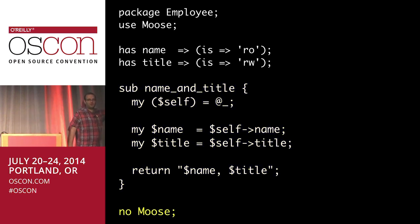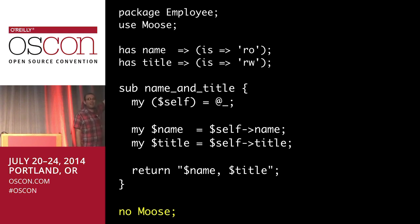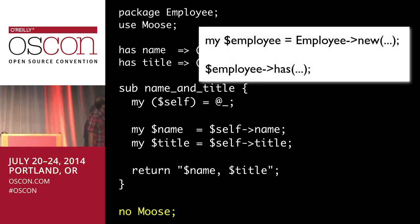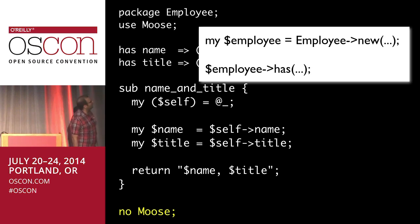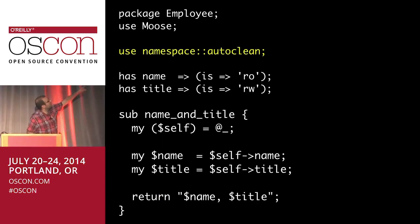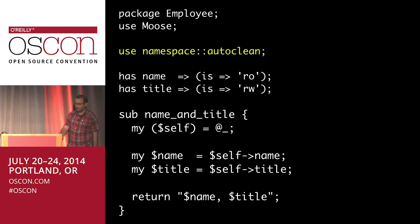At the end we've said 'no Moose.' 'No' is the opposite of 'use': use brings in all that stuff from Moose, and 'no' throws it away. The reason is that Moose has given us not just the ability to be a Moose class, but also imported things like 'has' into our namespace. If we don't get rid of it, someone later might call 'Employee->has(...)' and something weird will happen because functions and methods occupy the same namespace. In reality, I use 'namespace::autoclean' instead, which does the same thing but also removes anything else you've imported.